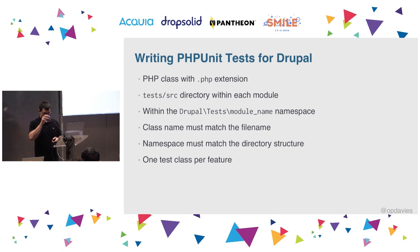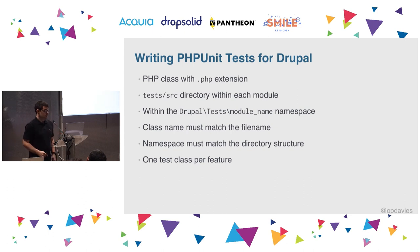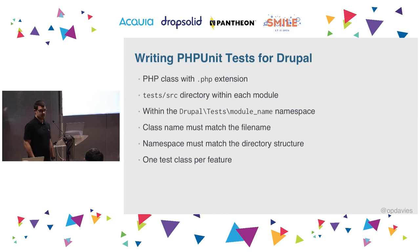So how do we write PHPUnit tests for Drupal? Each test is a class with a .php extension. You have tests per module — each module has its own test directory; you're not writing tests at an application level, you're writing them per module. There's a separate Drupal\Tests namespace. Because of PSR-4 autoloading, the class name must match the file name, the namespace must match your directory structure, and there's one test class per feature — very similar to writing controllers and other classes that use PSR-4.